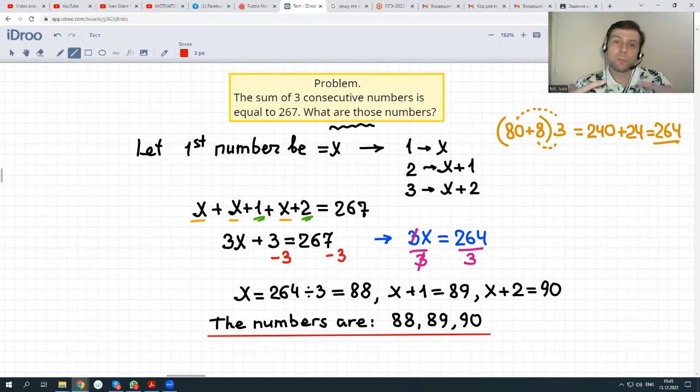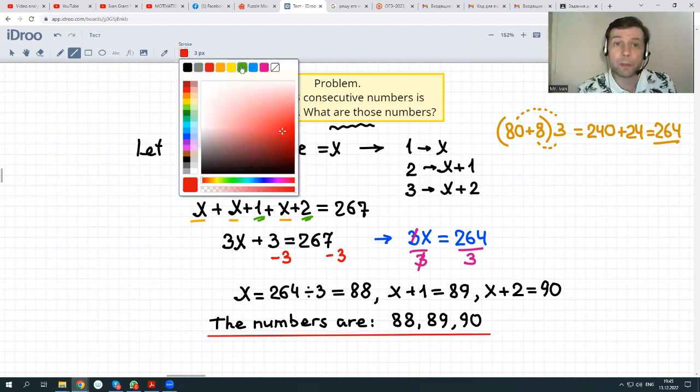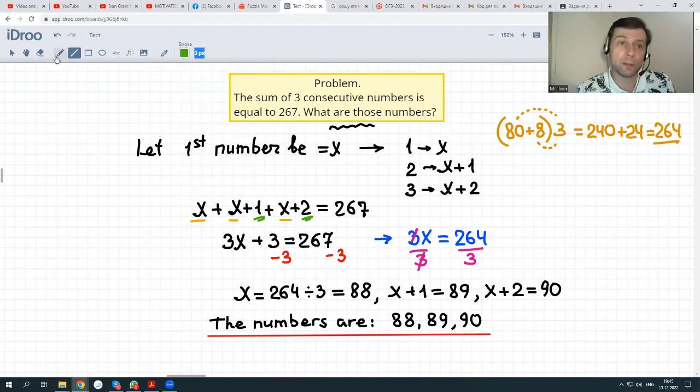So, main difficulty is to make a step from text, from words to the equation, to the algebraic language. But we have to do smaller steps to think of what is x, something that is unknown. Basically, it doesn't matter which number to assign as x. We could say that third number could be x, or y. If third number is y, then second number would be y minus 1, and first number would be y minus 2. It's also possible. But we chose another way. Everything works.